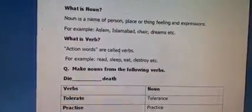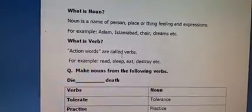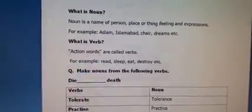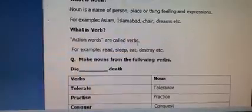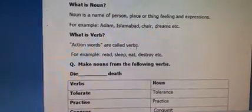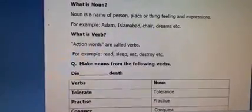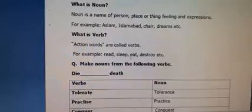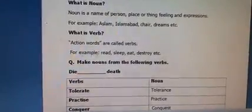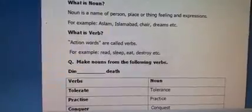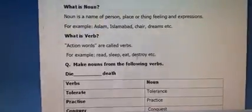Next, what is a verb? Action words are called verbs. It is a very simple definition: action words are called verbs, meaning doing words. Kisi bhi kaam ka hona ya karna verb kehlata hai. For example: read, sleep, eat, destroy, etc. Read means parhna, sleep means sona, eat means khana, destroy means tabah hona ya karna.